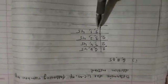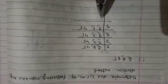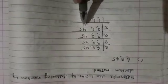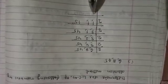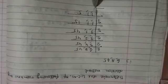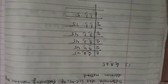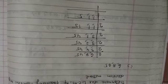Now 3 is divisible by 3, and 45 is also divisible by 3. So write 3. 3 ones are 3, 3 ones are 3, and 3 fives are 15. Again 15 is divisible by 3: 3 fives are 15. Now 5 is not divisible by 3, so move to the next lowest prime number, which is 5. 5 is divisible by 5; 5 ones are 5.